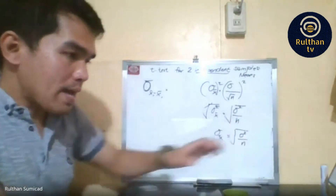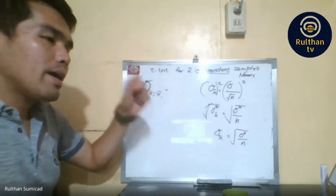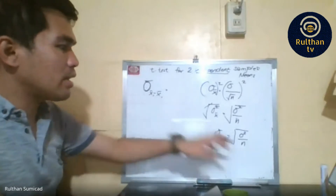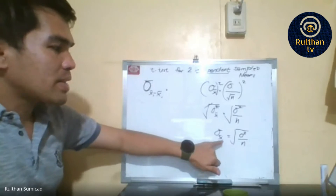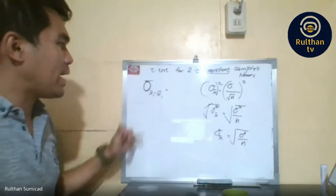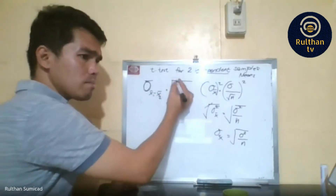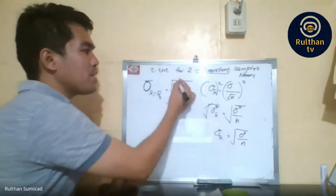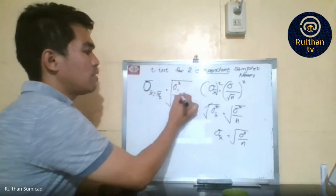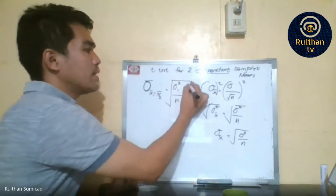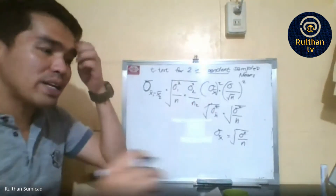To solve for the standard error when there are two means, since it is already combined, we have the formula: standard error equals sigma squared for group one over n1 plus sigma squared for group two over n2. This is now our formula for the standard error of difference.